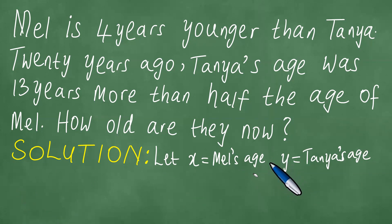We proceed to solve this problem. Mel is 4 years younger than Tanya, meaning Mel's age is smaller. So we take Tanya's age minus Mel's age, and the difference is exactly 4 years: Y - X = 4.